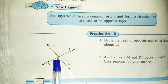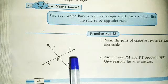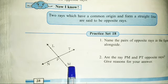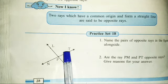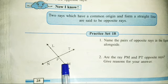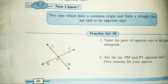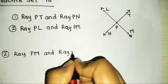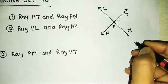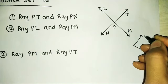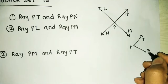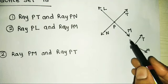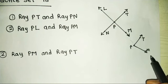Looking at the figure, even though P is the common origin, ray PT and ray PM - do these two rays form a straight line? Look carefully, ray PT and ray PM do not form a straight line. Therefore, these two rays are not opposite rays. Let me draw a rough figure on the side - P, T, and M. You can see that even though the origin is common for these two rays, they do not form a straight line. Therefore, these two rays are not opposite rays.